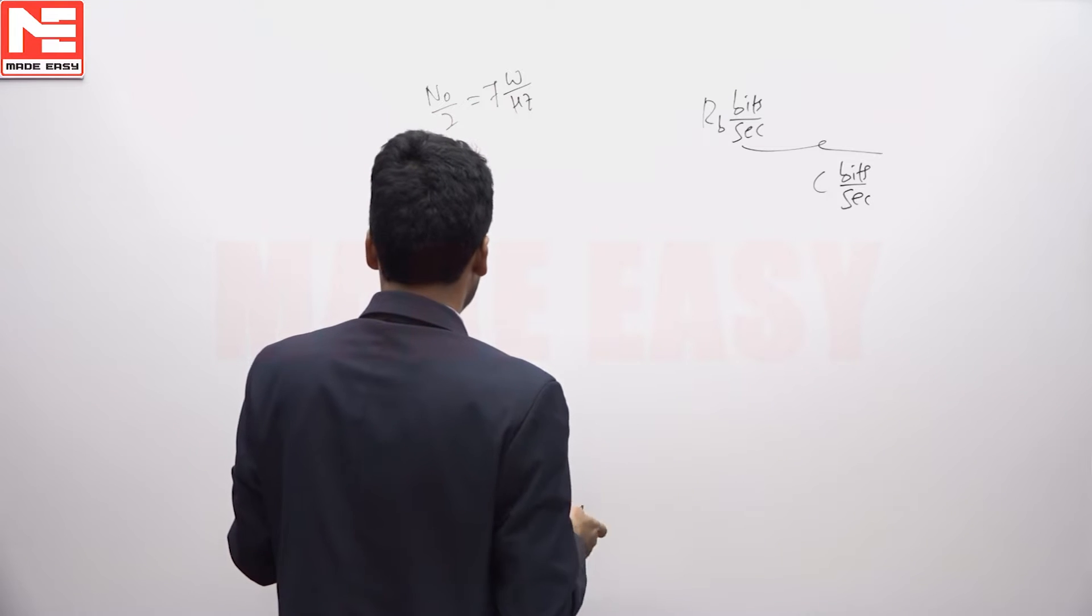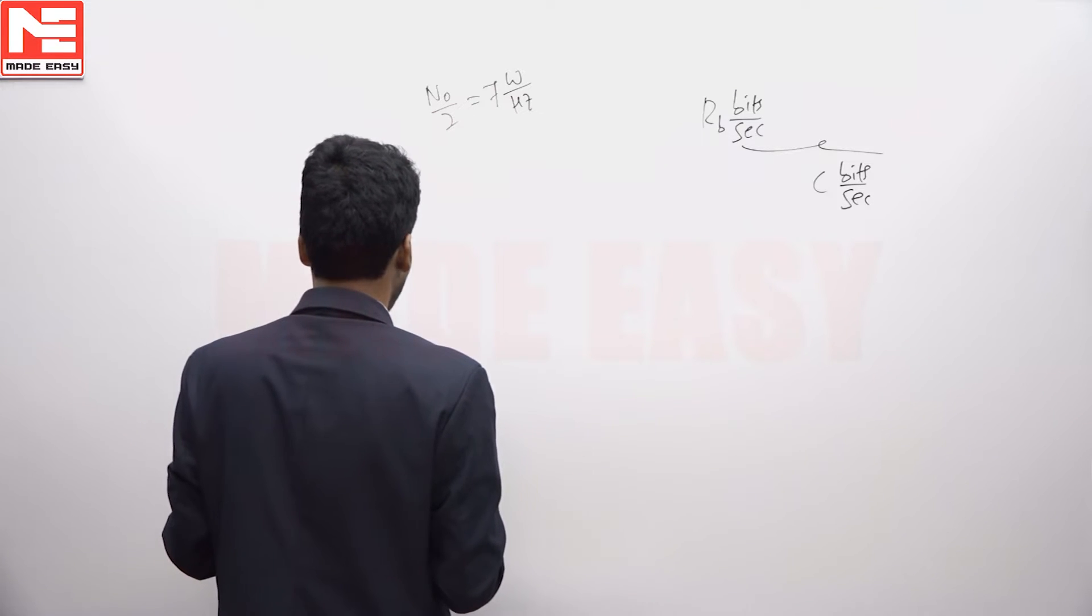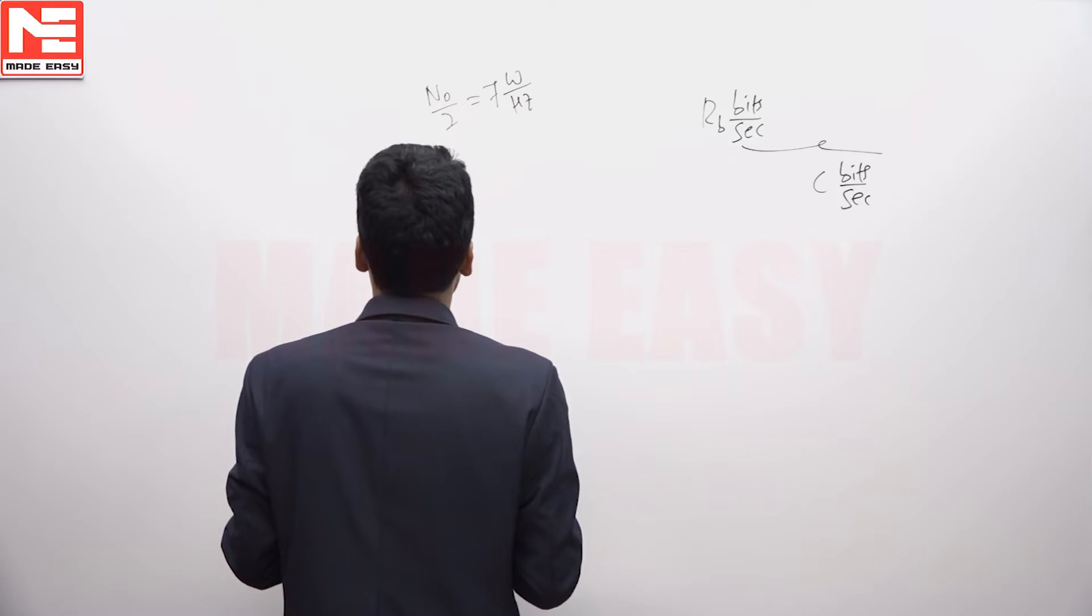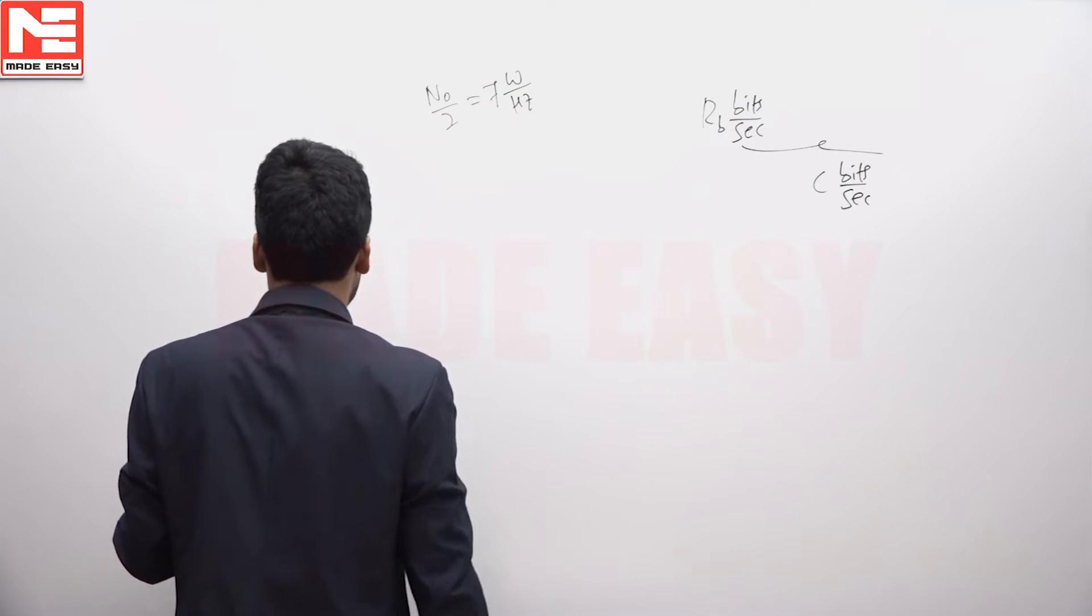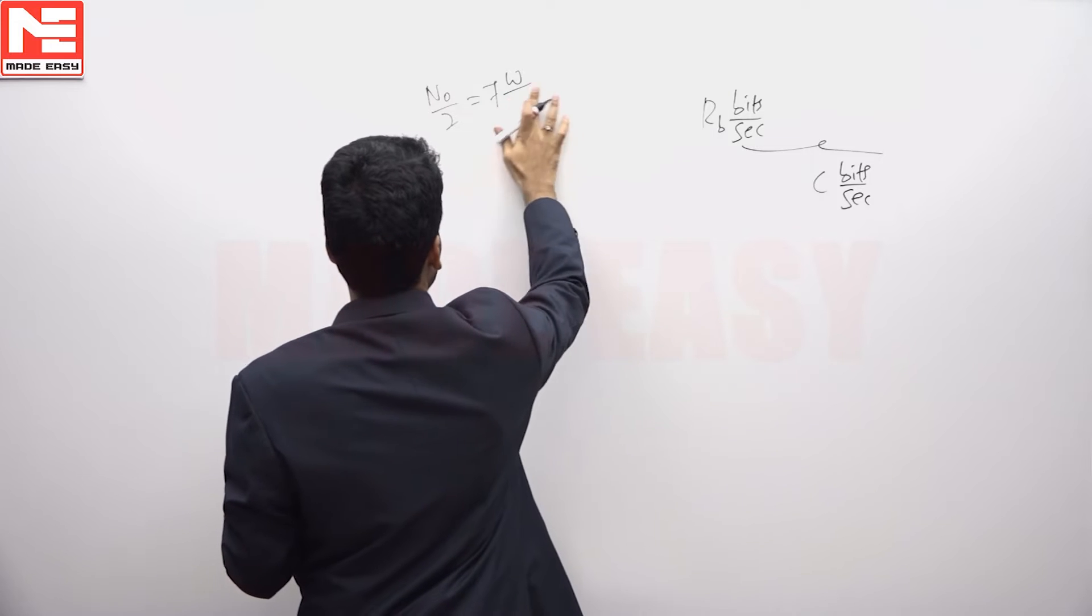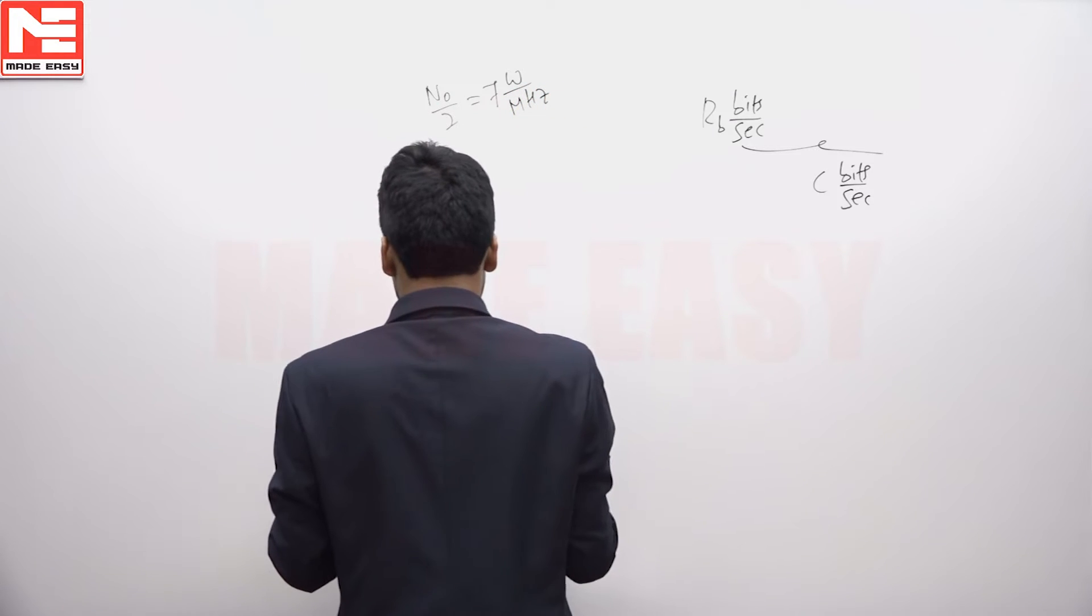Here the signal with bitrate RB and infinite bandwidth is transmitted through an AWGN channel. The two-sided PSD N0 by 2 is 7 watts per megahertz.